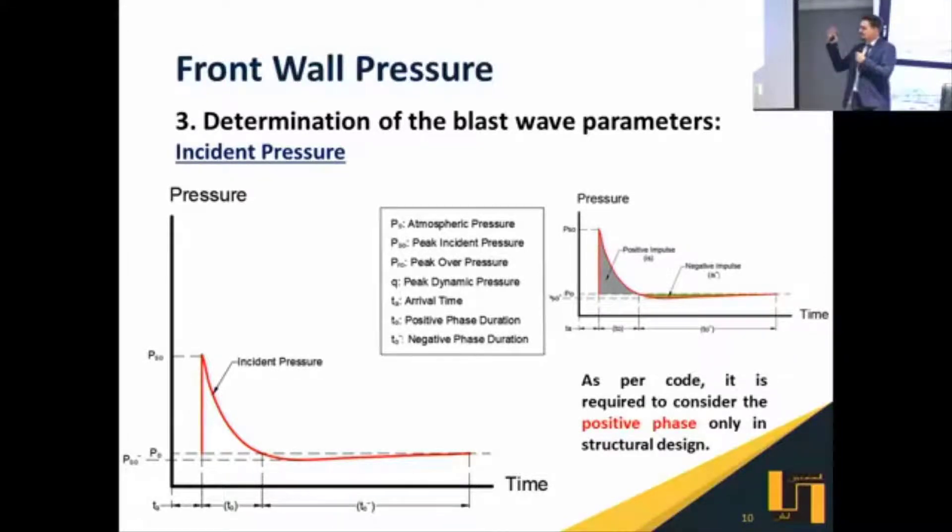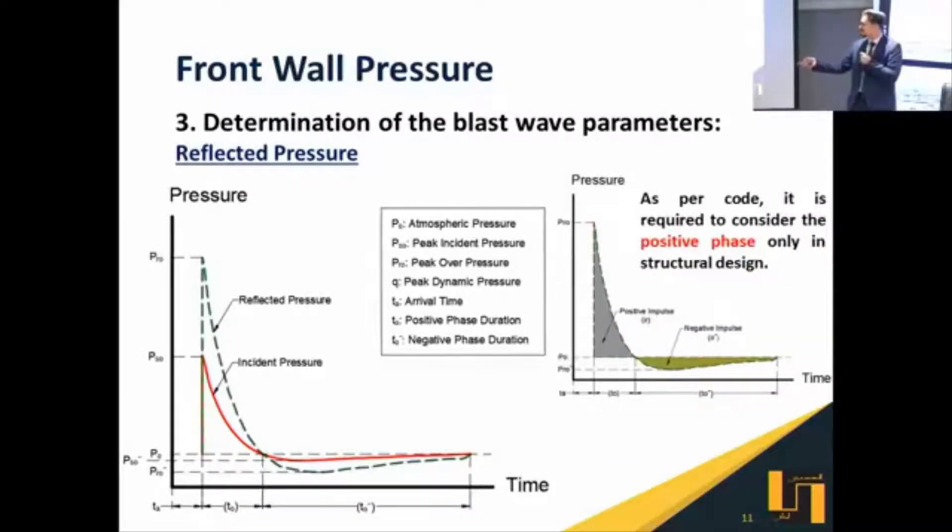Now, after the wave propagates, it will reach the front surface and hit it, then reflects. This will cause a pressure on the surface called the reflected pressure or the overpressure. This reflected or overpressure is the design value for us as designers, and we are going to design for this value. By the way, this is usually from 2 up to 10 times higher or greater than the incident pressure, with similar behavior.